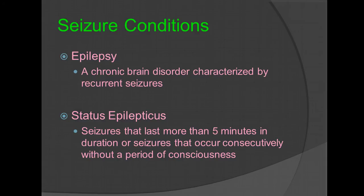Seizure conditions to keep cognizant of include epilepsy, which is a chronic brain disorder characterized by recurrent seizures. Bystanders — typically family or friends who know the patient — will typically be the first to identify that the patient is epileptic. Status epilepticus is a seizure that lasts more than five minutes in duration, or seizures that occur consecutively without a period of consciousness. These can be quite scary for first responders, primarily because patients have tendencies to become apneic. Keep a patent airway, provide oxygen therapy, and rescue breathing as needed.